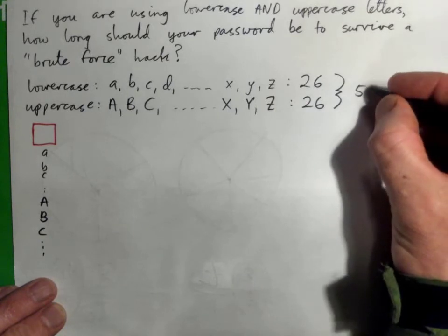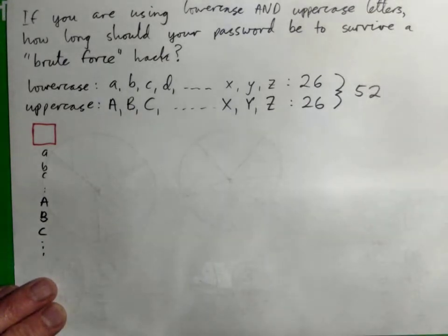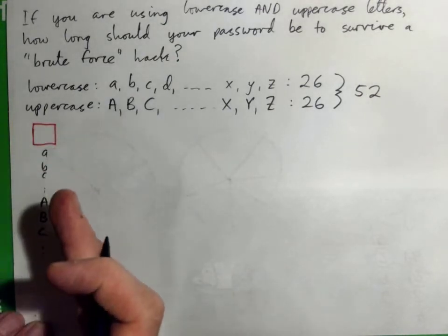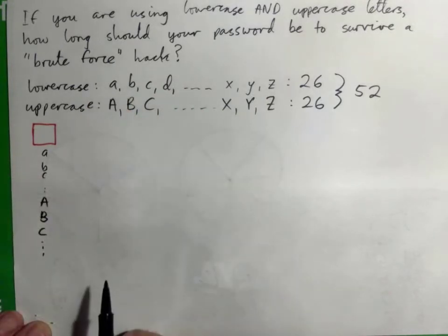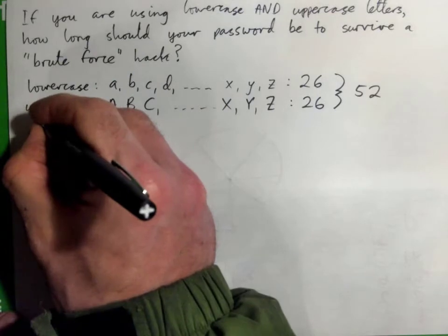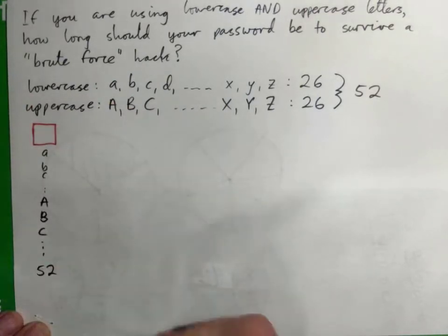letters are we using here? 52, right? So if we have a one-letter password and the letters could be upper or lowercase, how many possible combinations have we got? 52, right?